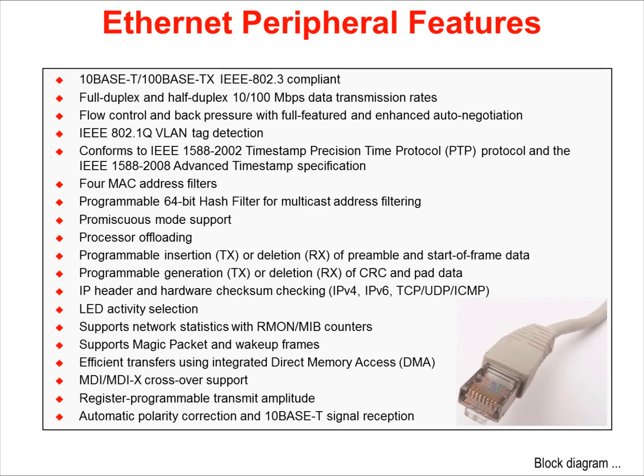The Ethernet peripheral has a long list of features. The module is 10BaseT and 100BaseTX IEEE 802.3 compliant. It supports full duplex and half duplex at both data transmission rates. It conforms to the IEEE 1588-2002 Timestamp Precision Time Protocol and the IEEE 1588-2008 Advanced Timestamp Specifications. These protocols impart CAN bus-like predictability to Ethernet communication.